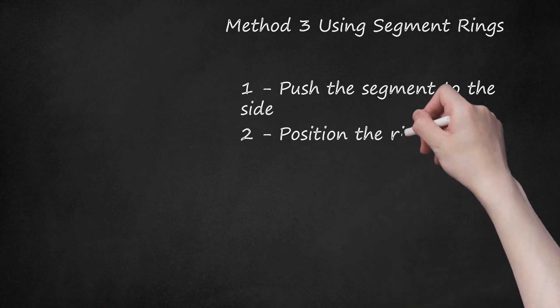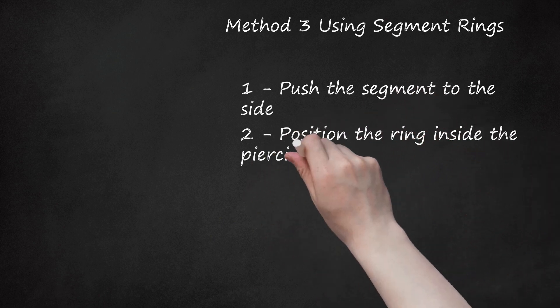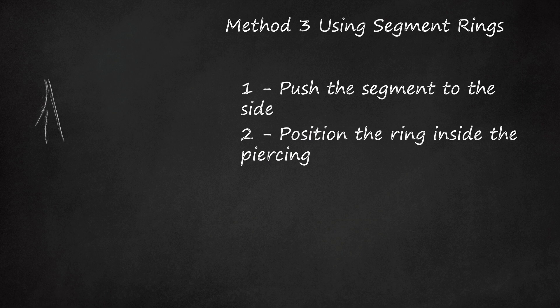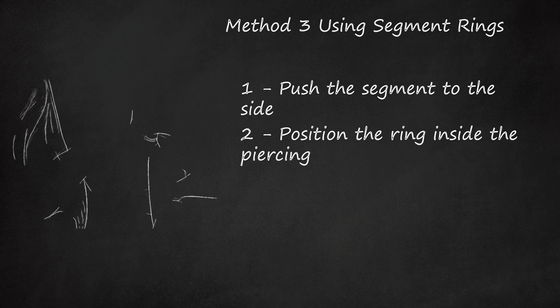Step 2 - Position the ring inside the piercing. Feed one end of the main hoop through your nose piercing. Continue feeding the hoop through the hole until the bottom is centered inside the piercing and the opening lies directly below it.